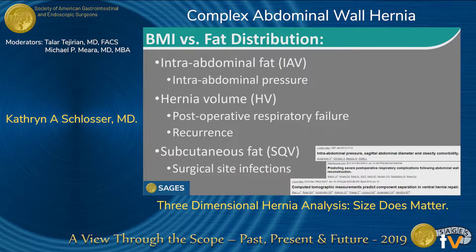Specific fat distribution has been associated with specific outcomes: intra-abdominal fat with intra-abdominal pressure and hernia recurrence, hernia volume with postoperative respiratory failure and hernia recurrence, and subcutaneous fat specifically with surgical site infections.